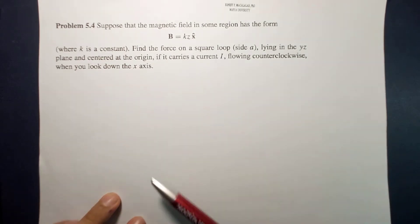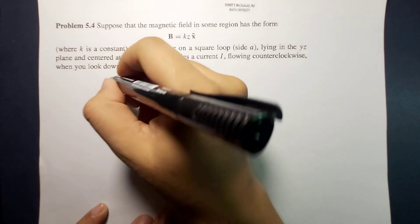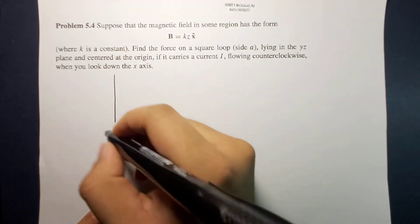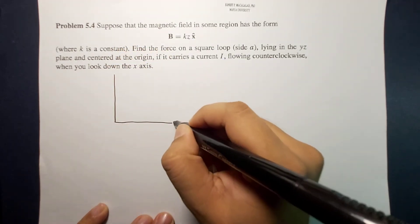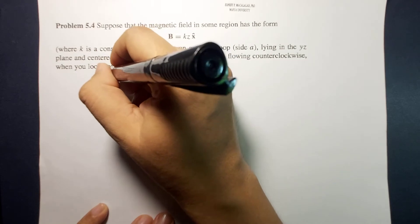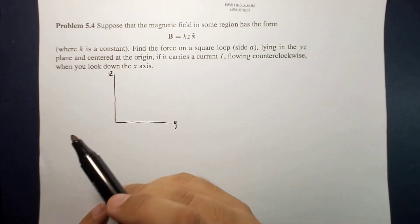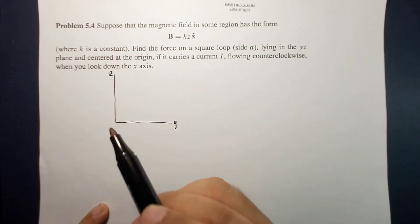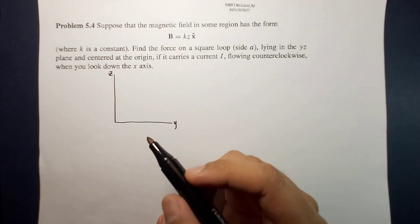If it carries a current I flowing counterclockwise when you look down the x-axis. Okay, so if you're going to look at this you can draw it as follows.